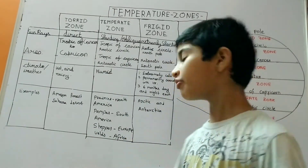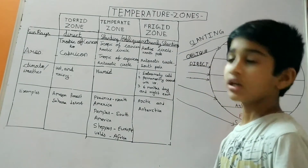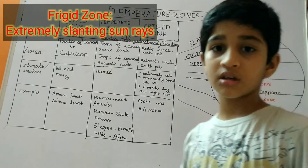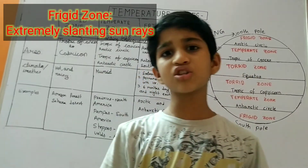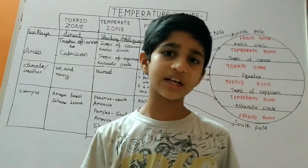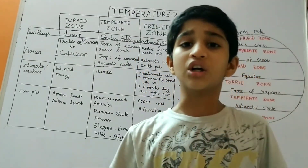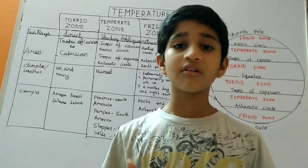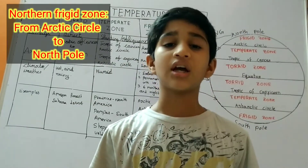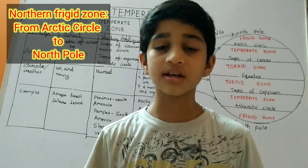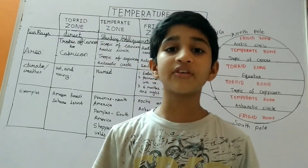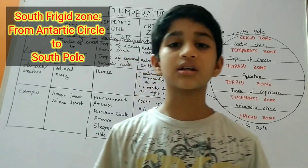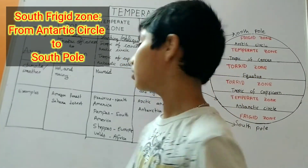Now let us move to the frigid zone. In the frigid zone, we get extremely slanting rays. Like the temperate zone, it is divided into two groups: the north frigid zone and the southern frigid zone. The north frigid zone extends from the Arctic Circle to the North Pole. The south frigid zone extends from the Antarctic Circle to the South Pole.